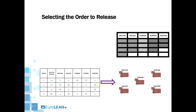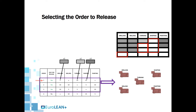In the scenario shown here, there are four orders and three of them are due for release: orders 1, 2, and 3. Order 1 has the earliest release date, so it is considered first. It requires one card for drilling, two for turning, and three for shipping, based on the 5, 10, and 15 minutes required at those workstations. Checking the planning board, all cards are available, so they are detached from the board and attached to order 1 for its release into the system.